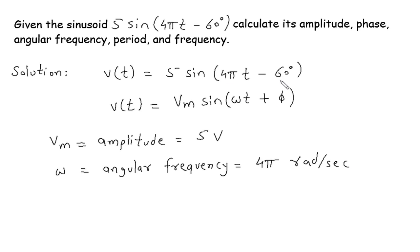Then next is φ. So φ is the phase angle or phase and it is equal to minus 60°.